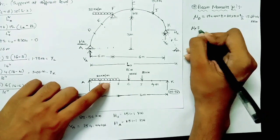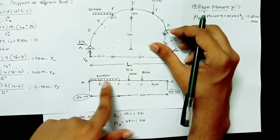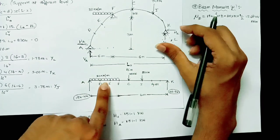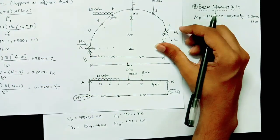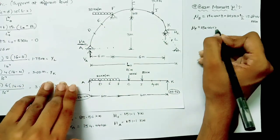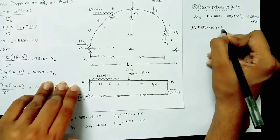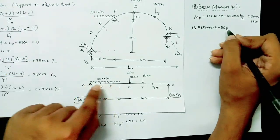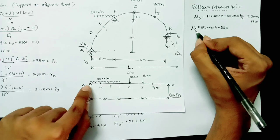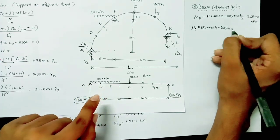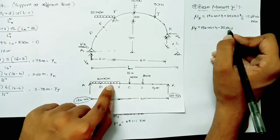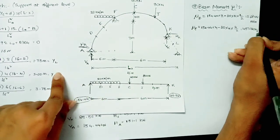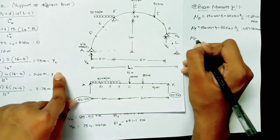At point E: Mu_E = 154.44 × 4 − 20 × 4 × (4/2) = 617.76 − 160 = 457.76 kN·m. At point F: Mu_F = 154.44 × 6 − 20 × 6 × (6/2) = 926.64 − 360 = 566.64 kN·m.